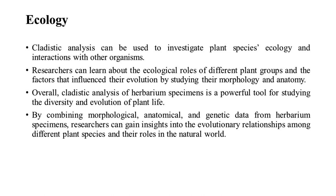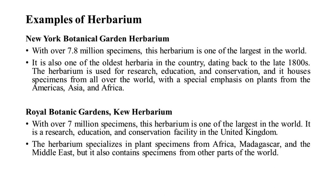The New York Botanical Garden Herbarium, with over 7.8 million specimens, is one of the largest herbaria in the world and one of the oldest in the country, dating back to the late 1800s. It is used for research, education, and conservation, housing specimens from all over the world with a special emphasis on plants from the Americas, Asia, and Africa.